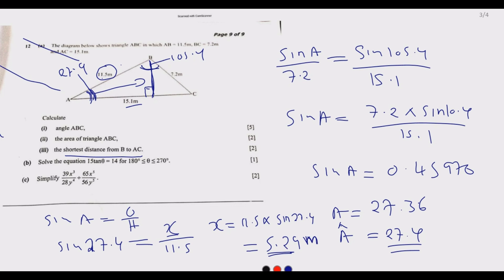Calculating: x = 11.5 × sin(27.4°) ≈ 5.29 metres to three significant figures. That completes part 12(b)(ii).